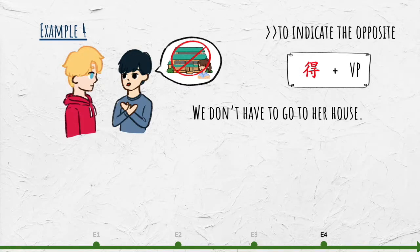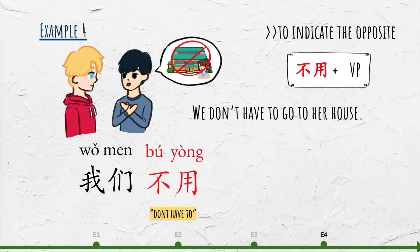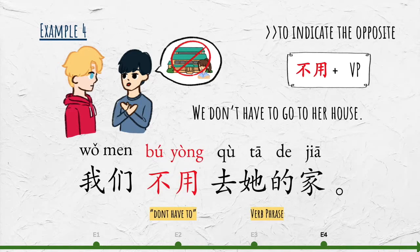To indicate the opposite, replace 得 with 不用. For example, we don't have to go to her house: 我们不用去她的家.